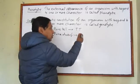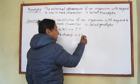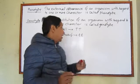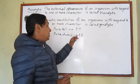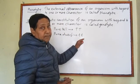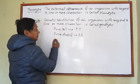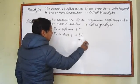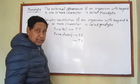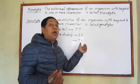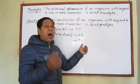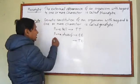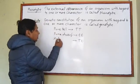In the same way, if both genes have the character of dwarfness, then this is called pure dwarf and it is denoted by small t small t. But if a pea plant has capital T and small t, it means it has the character of being tall and also the character of being dwarf, but externally it appears tall — then we call it hybrid tall.